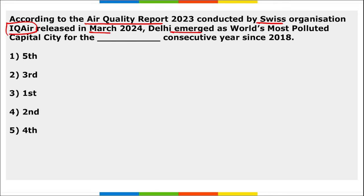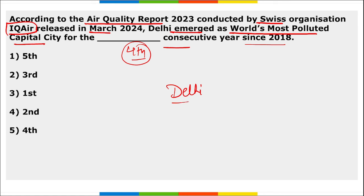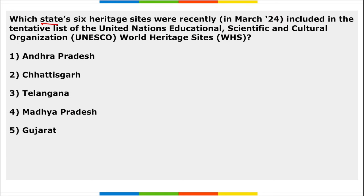According to the Air Quality Report by Swiss organization IQAir released in March, Delhi emerged as the world's most polluted capital city for the fourth consecutive time since 2018.